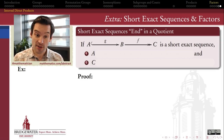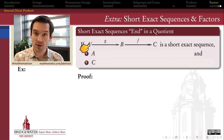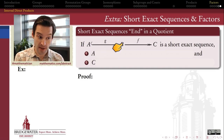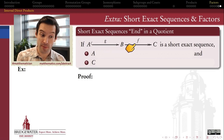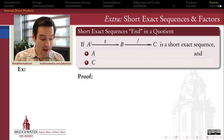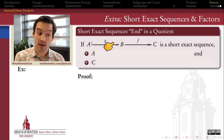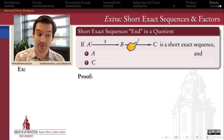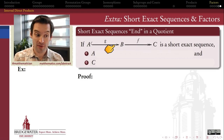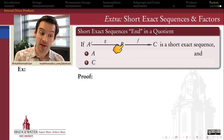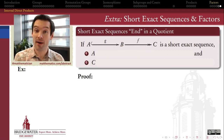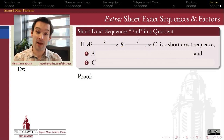A short exact sequence consists of three groups A, B, and C — a one-to-one homomorphism from A to B, call that one G, and an onto homomorphism from B to C, call that one F. What makes it exact is the fact that the image of G is exactly the same set as the kernel of F. Everything which arrives in B from this homomorphism gets sent to the identity by that homomorphism, and vice versa.